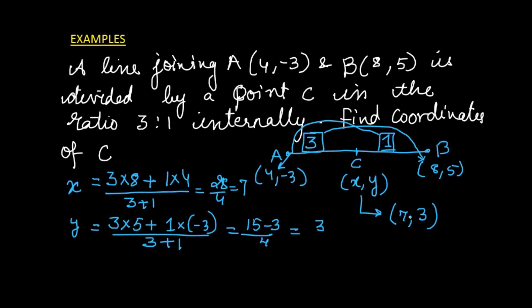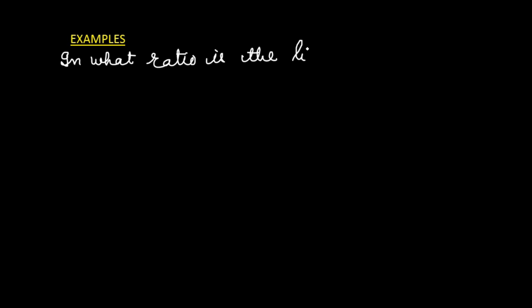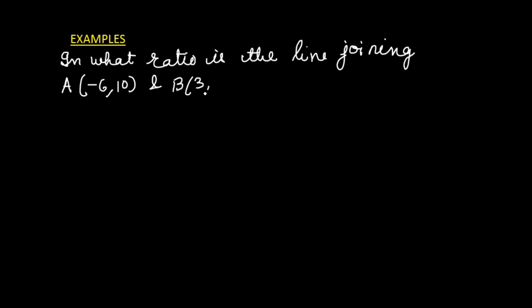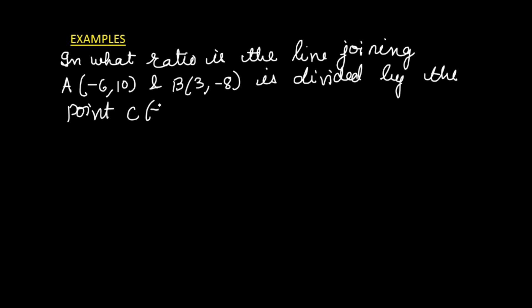So whenever a line segment is given, the coordinates of the two endpoints are given, and the ratio in which the line is being divided is also given, we can find the coordinates of the point of division using the section formula. Now one more different kind of example: in what ratio is the line joining point A(-6, 10) and point B(3, -8) divided by the point C(-4, 6)?